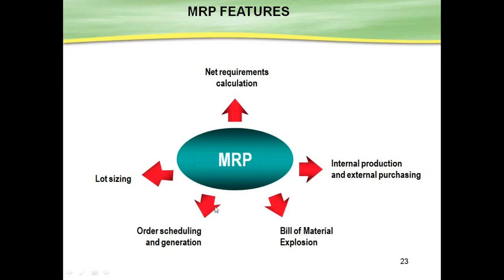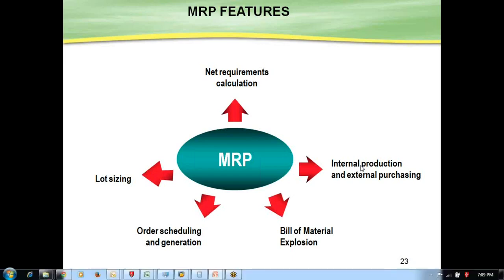Order scheduling: based on your work center capacity, orders are scheduled and the delivery date of your component is determined automatically. The BOM explosion, which we already discussed, identifies the components. Whether material is internally produced or externally purchased is defined in the material master. If you can produce the material in-house, the system gives you a planned order; if not, the system gives you a purchase requisition.